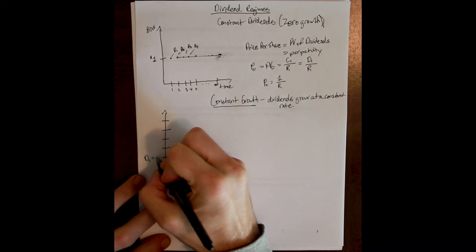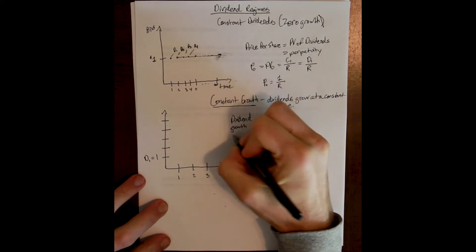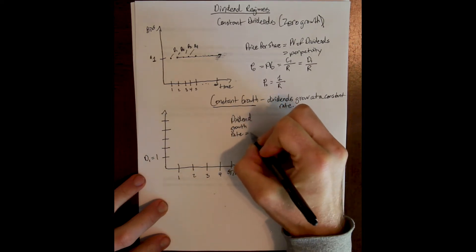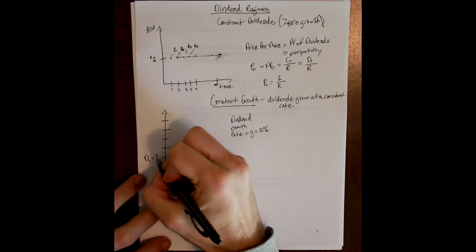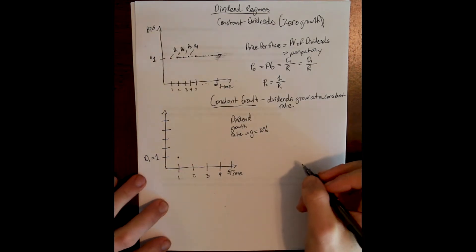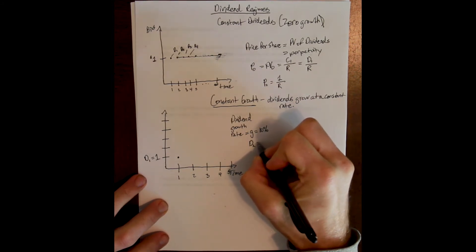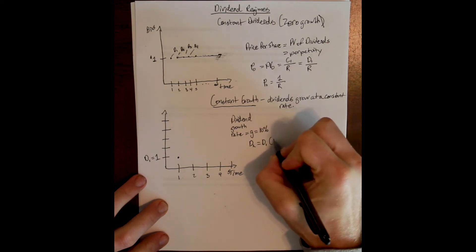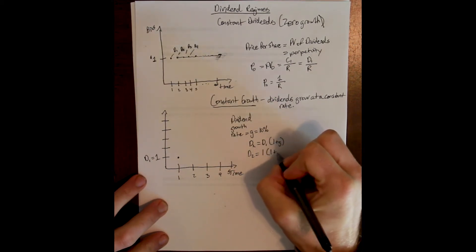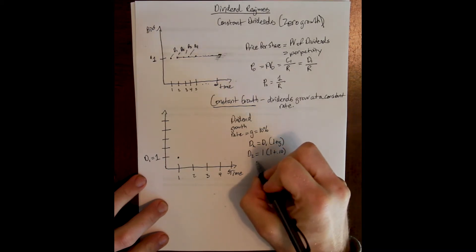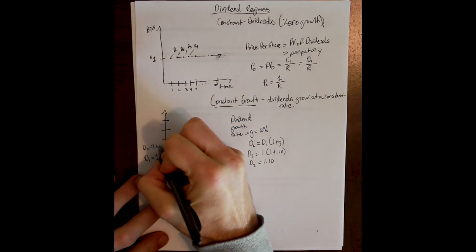If our first dividend is a dollar and the dividend growth rate, denoted as g, is 10%, then the second dividend is equal to the first dividend times one plus the growth rate. That means D2 equals one dollar times one plus 10%, which gives us one dollar and ten cents.